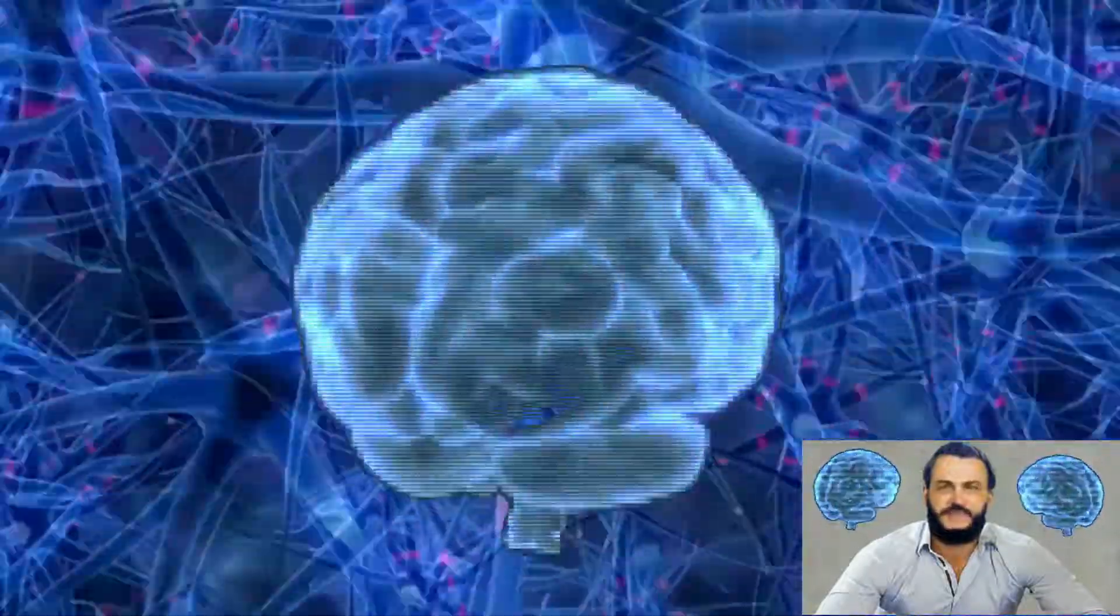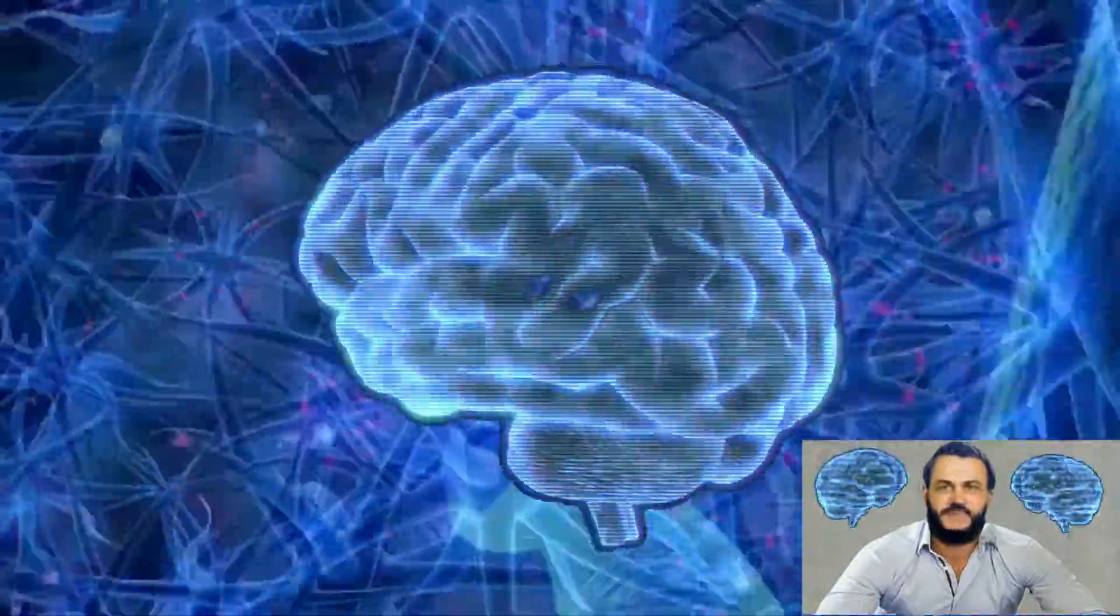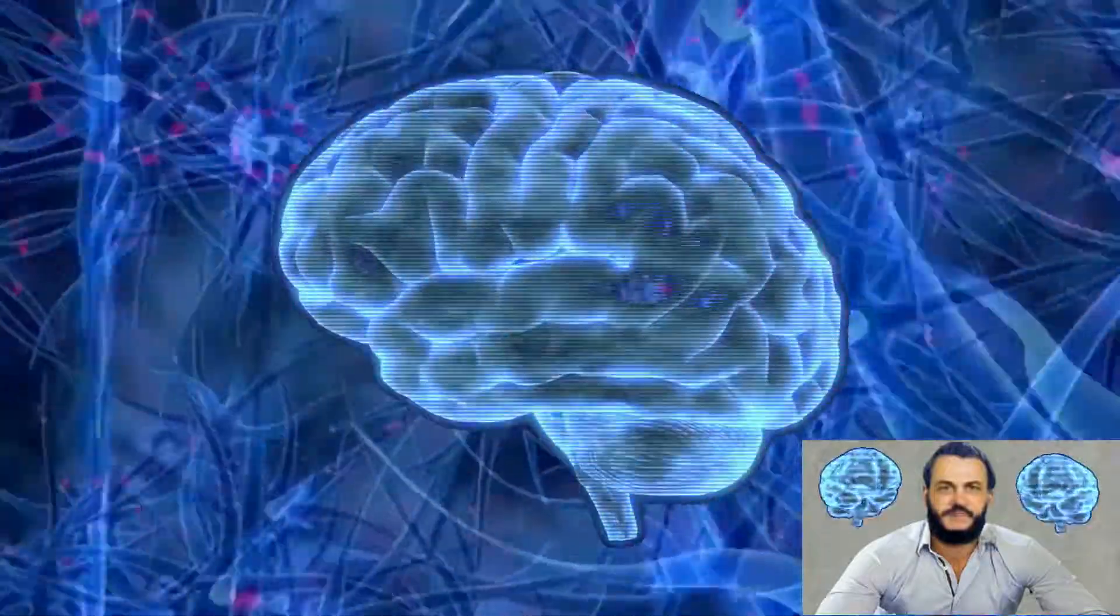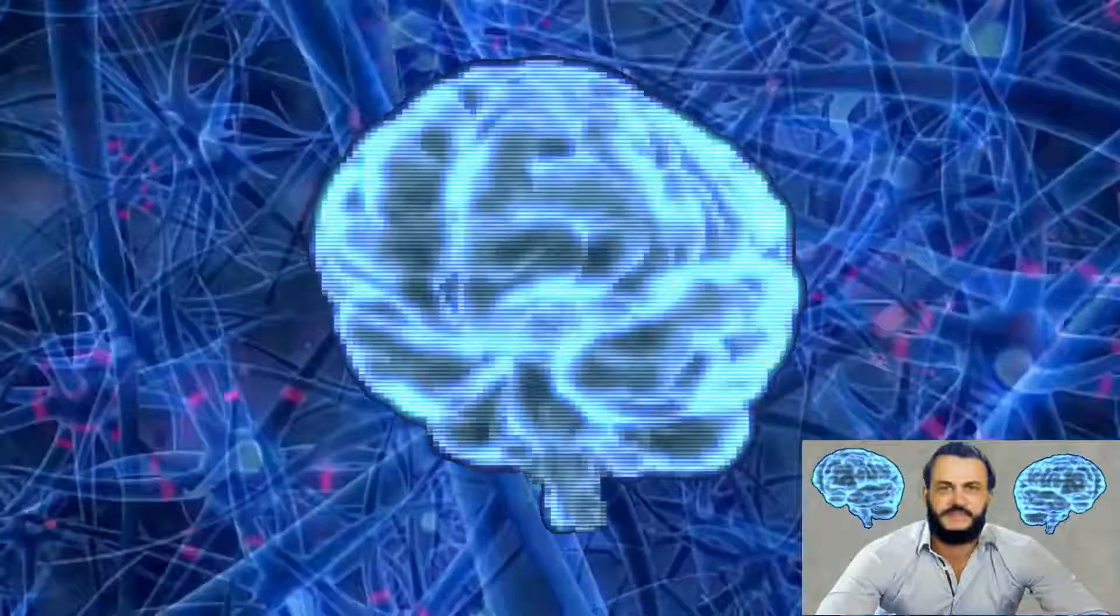Remember, your subconscious mind does not know what is true or false. It only responds according to your habitual thinking. If you consciously assume something is true, even though it may be false, your subconscious mind will accept it as true and manifest what you consciously assume to be true.